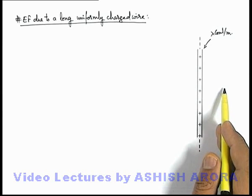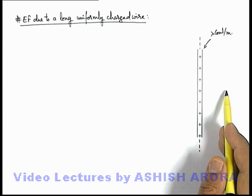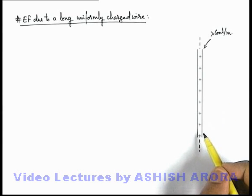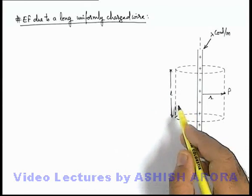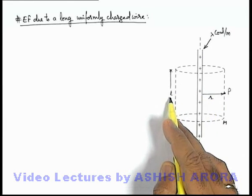By using Gauss's law, we need to consider a Gaussian surface such that the point where we wish to find the electric field will lie on the Gaussian surface, and at every point of the surface the electric field is either parallel or perpendicular to the surface. Let's consider a cylindrical Gaussian surface, named M. Point P lies on the lateral surface of this cylindrical Gaussian surface where we are required to find the electric field. The cylindrical Gaussian surface has radius r and length l.